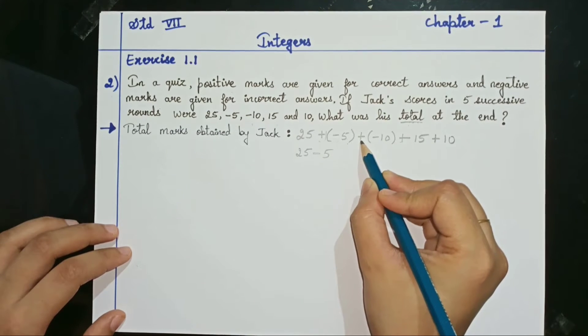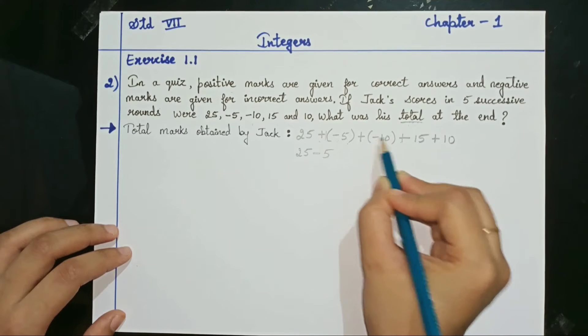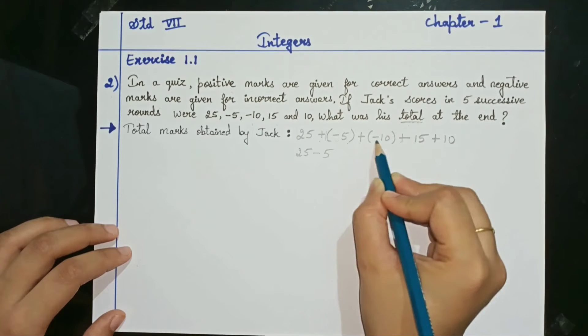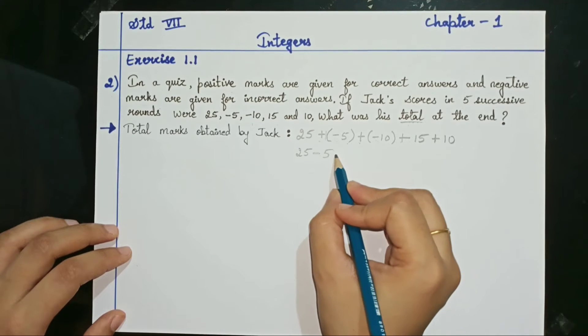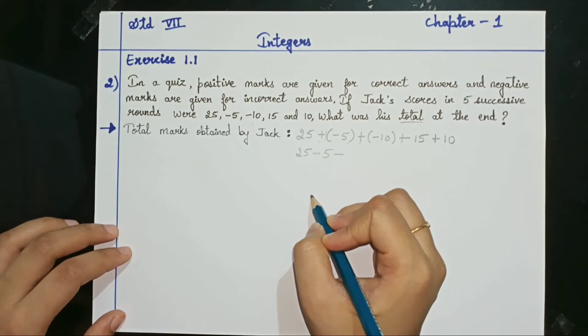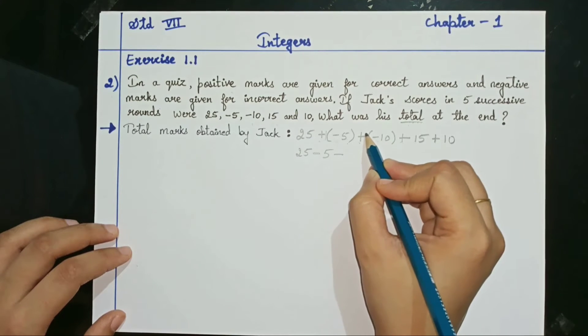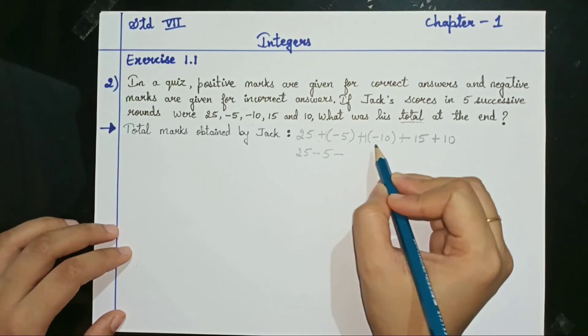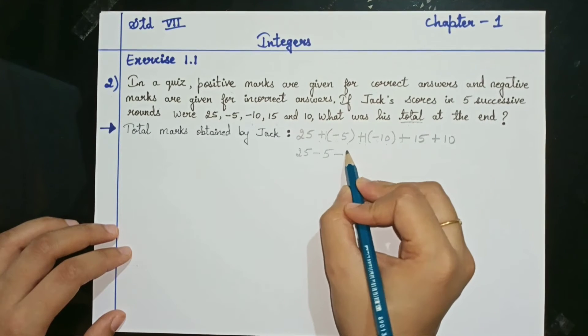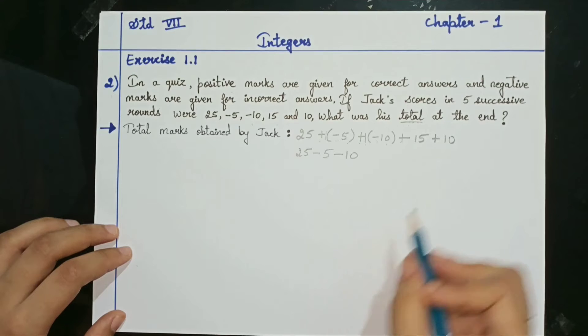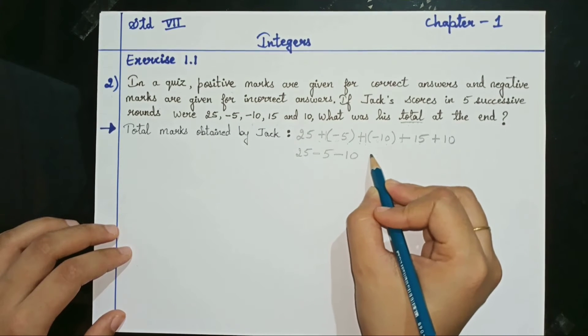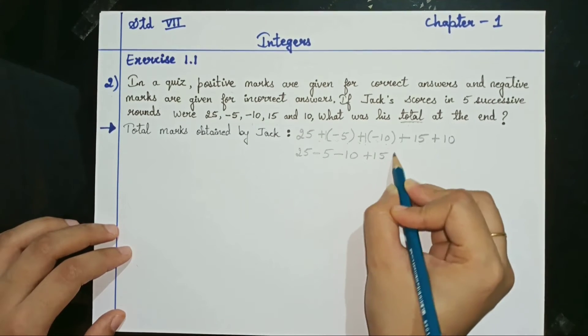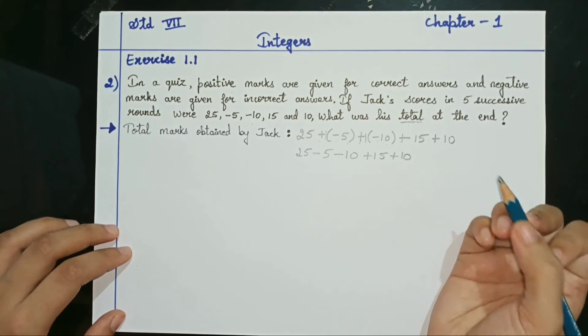Next, here outside the bracket it is positive. Inside the bracket it is negative. Since the signs are different, in the answer you will get minus sign. And no number is given here. Assume it to be 1. 1 times 10 is 10. Next, plus 15 and plus 10. Without brackets I will write them as it is directly down.